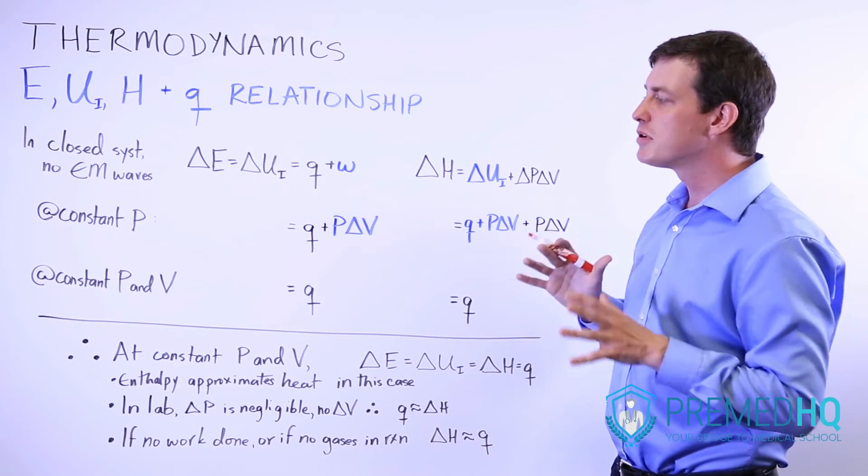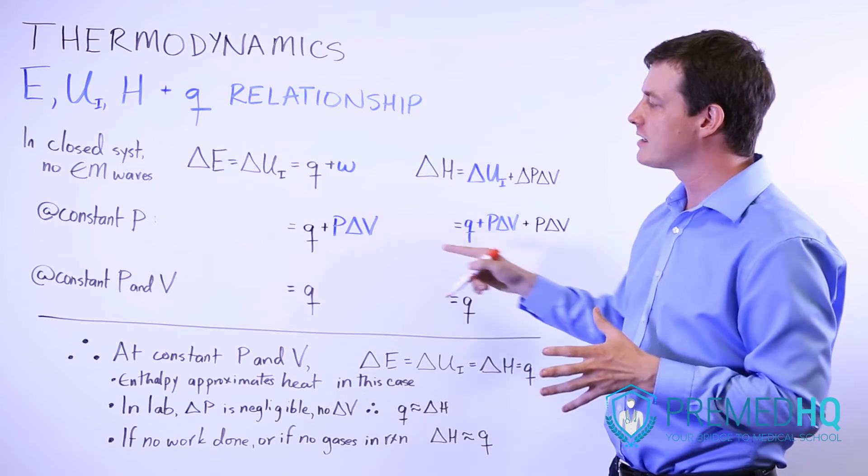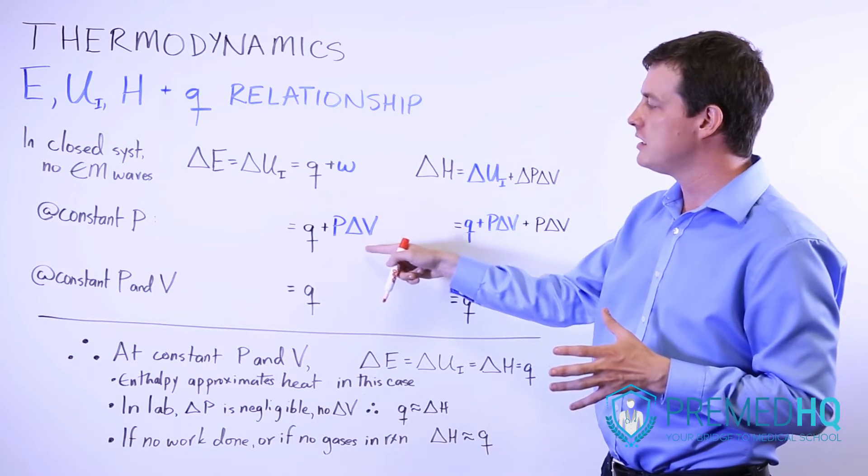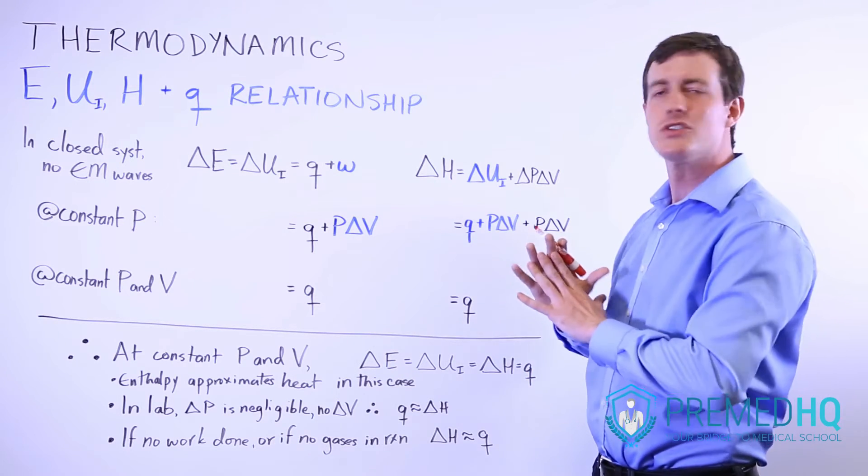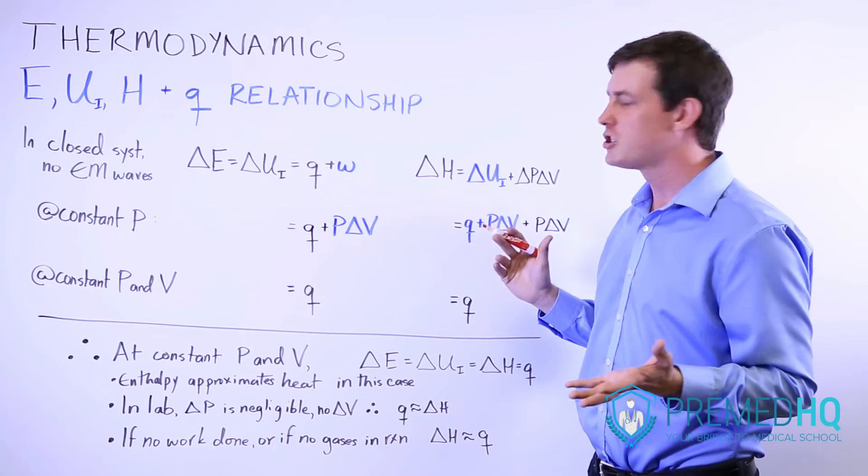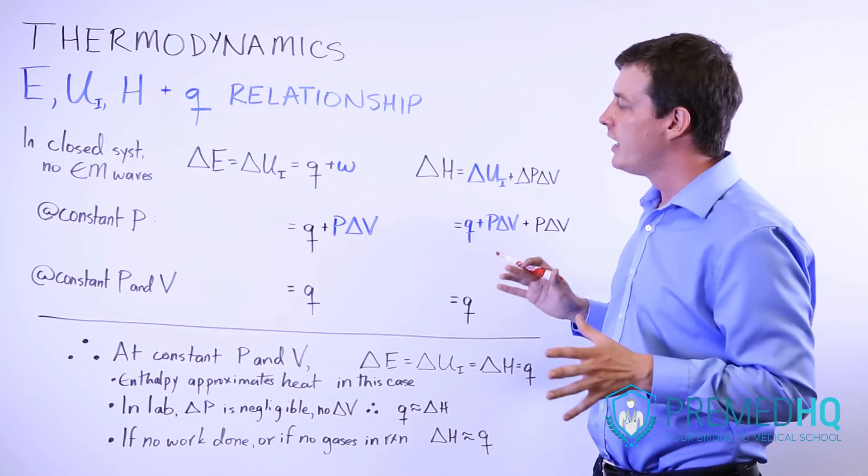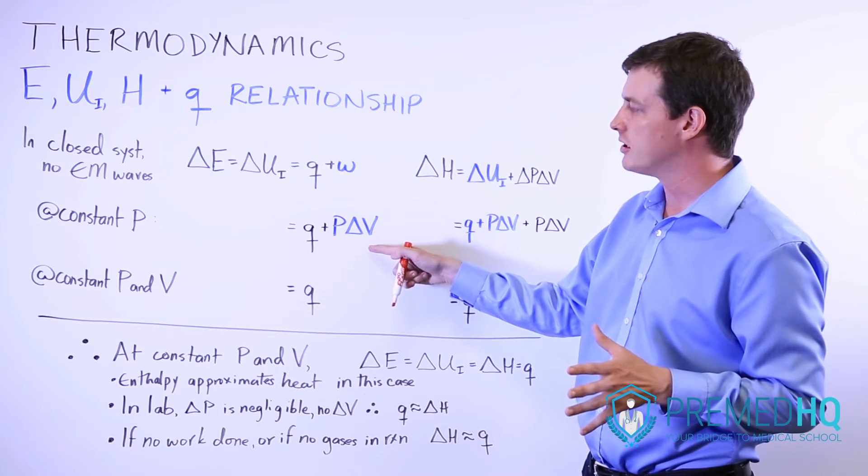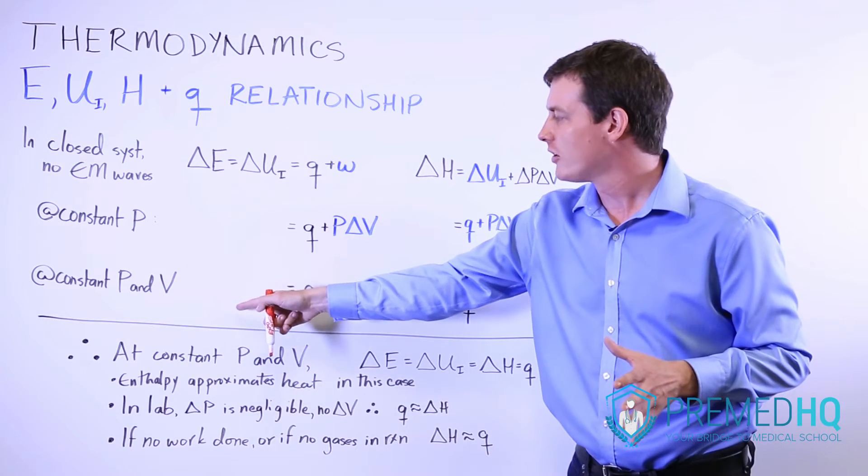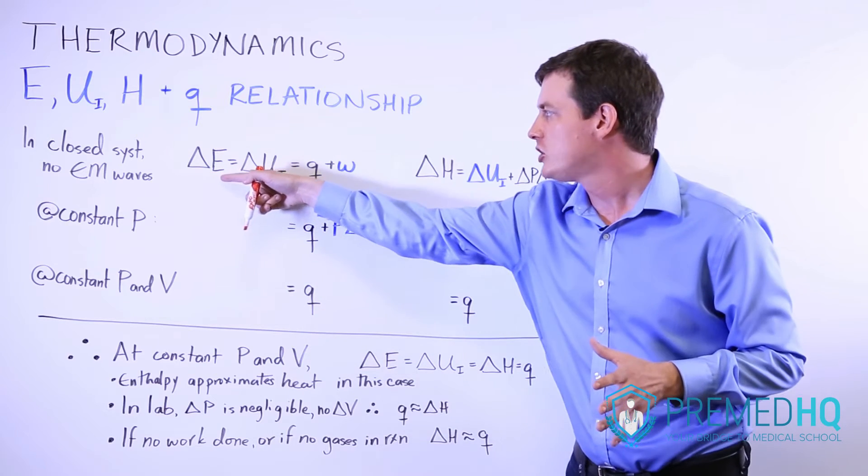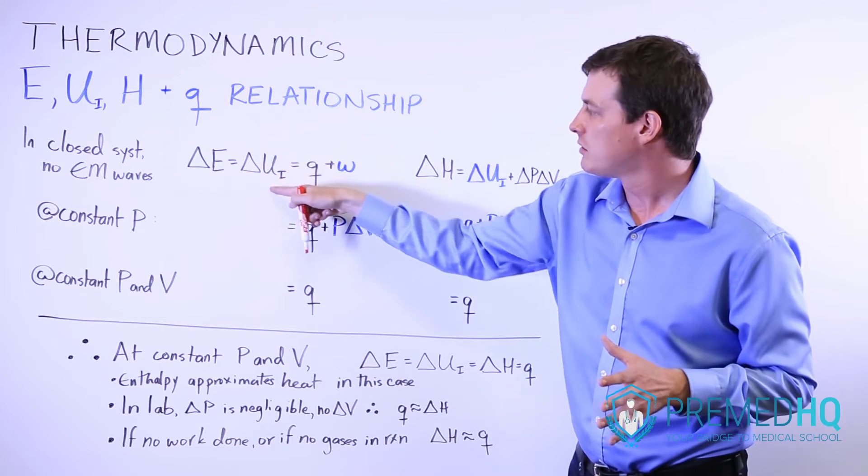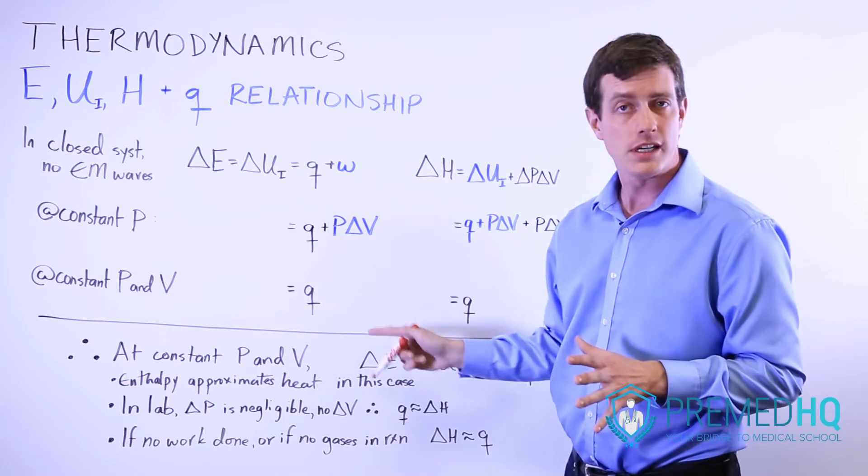If you have constant pressure and volume, then you don't have to worry about PΔV anymore, because if there is no ΔV, then pressure times the change in volume is going to be equal to zero, and we can just forget about it. So at constant pressure and volume, we can say that change in energy, which is equal to change in internal energy, is equal to heat.